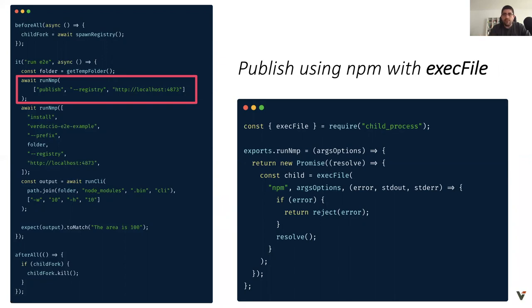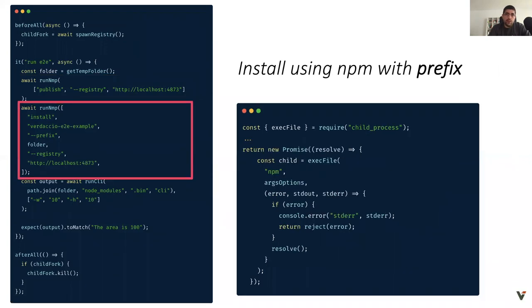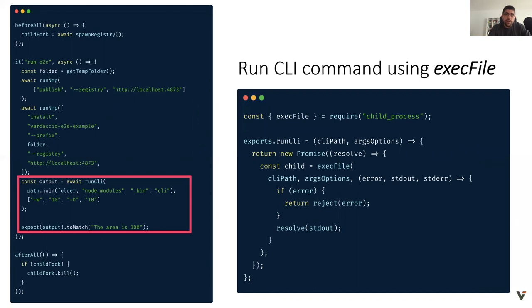For publishing you can use execFile from child_process to execute an external application — in this case npm — using the registry flag to publish to our Verdaccio instance. The next step is installing the CLI at a specific location using arguments like the registry URL and the prefix defining where to install the package, in this case a temporary folder. The last step is running the CLI from that location, capturing stdout and asserting expectations. Don't forget to kill the registry in afterAll after all your tests finish.